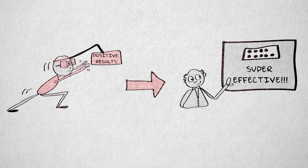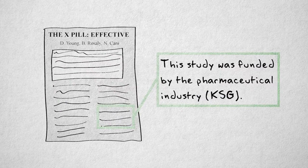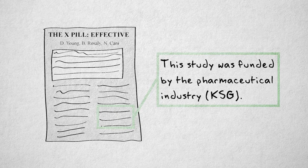Conflicts of interest cannot always be avoided, but they should at least be explicitly stated in a publication so readers can judge for themselves what the credibility of a study is.